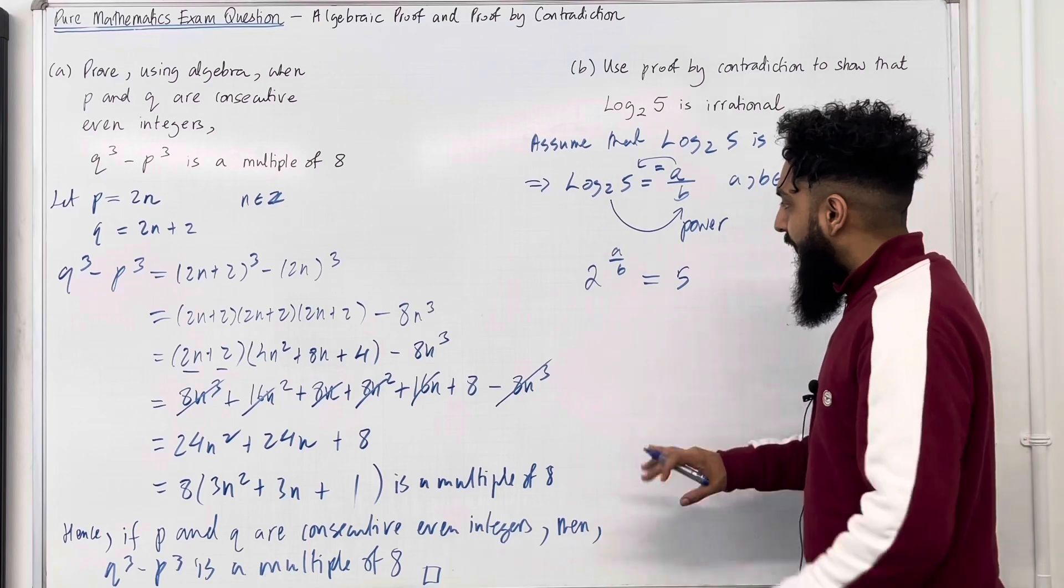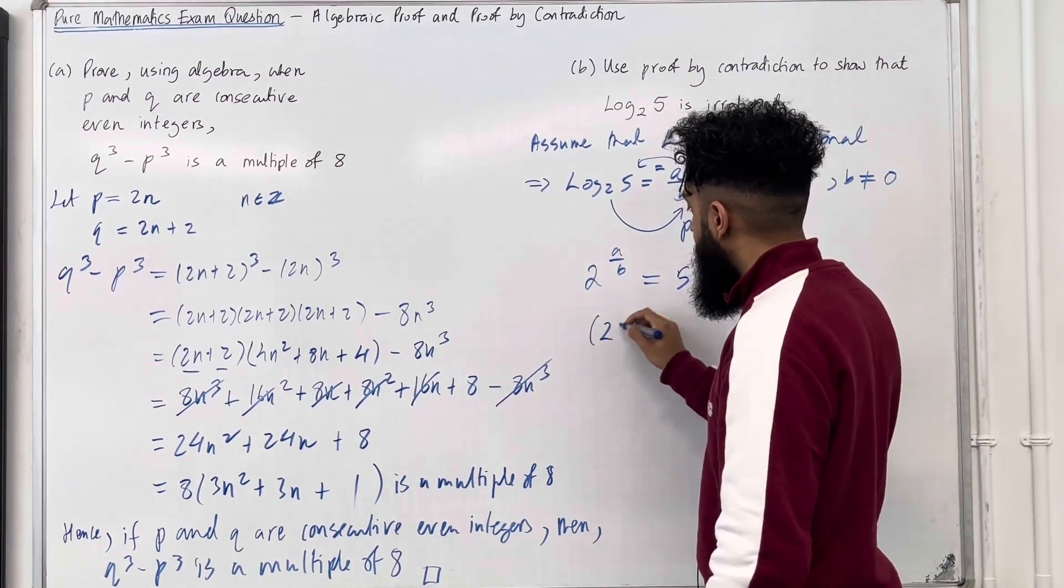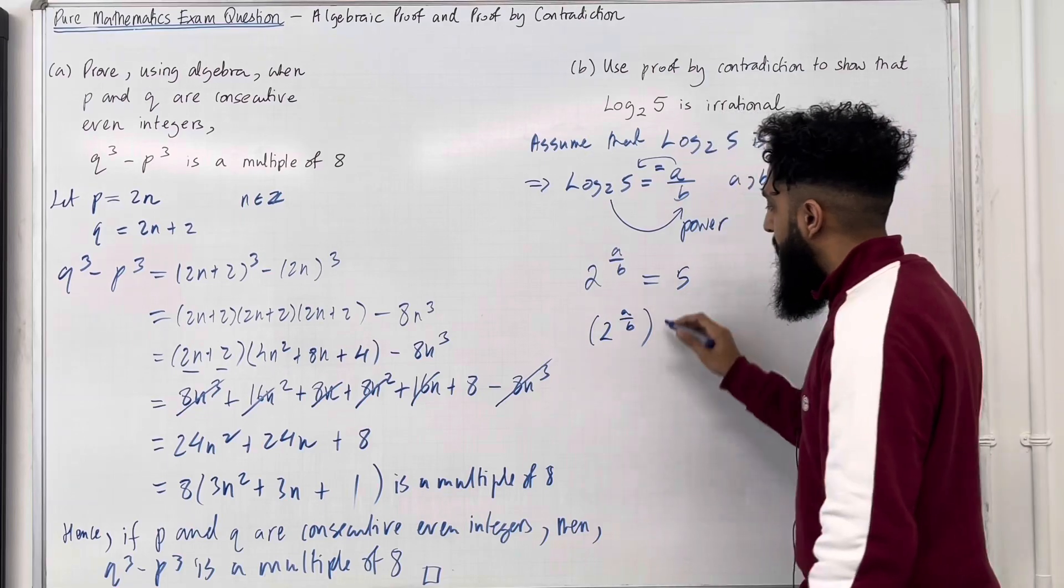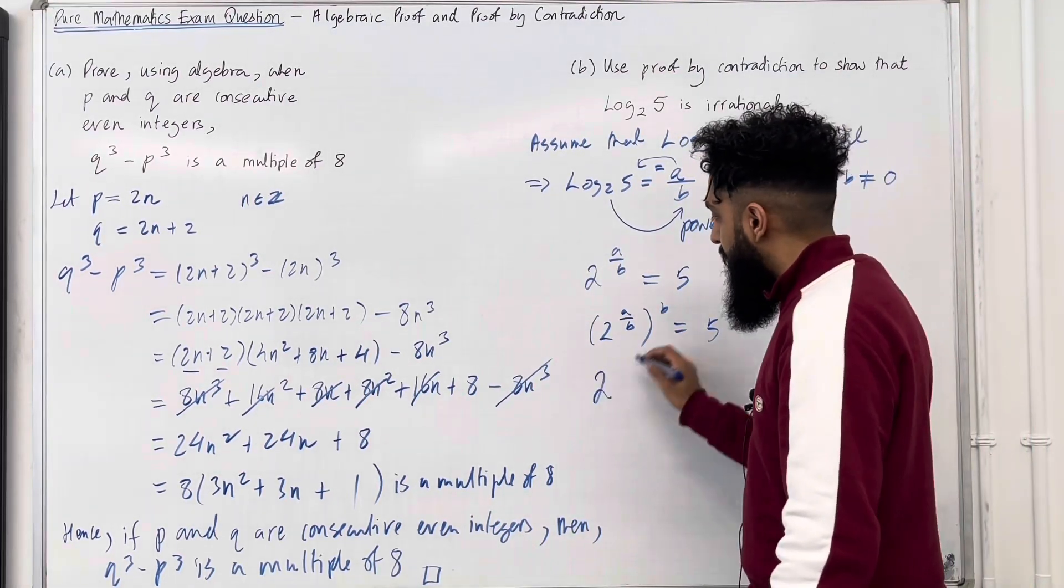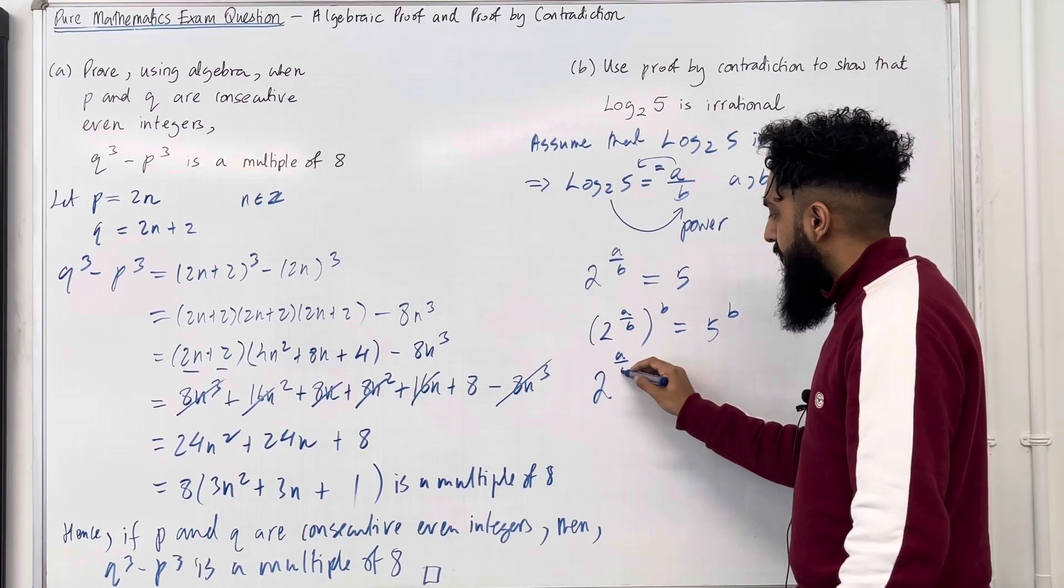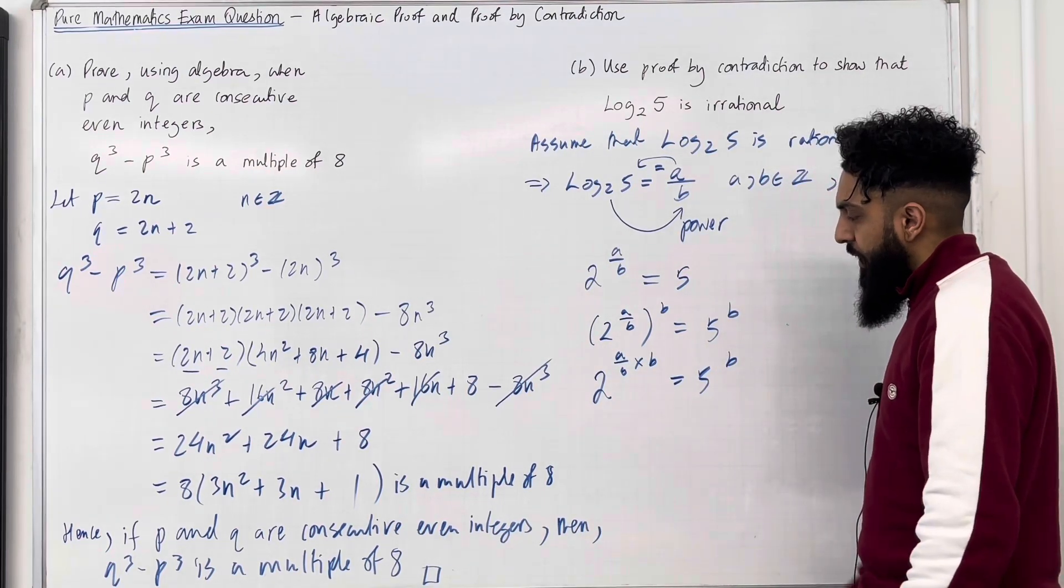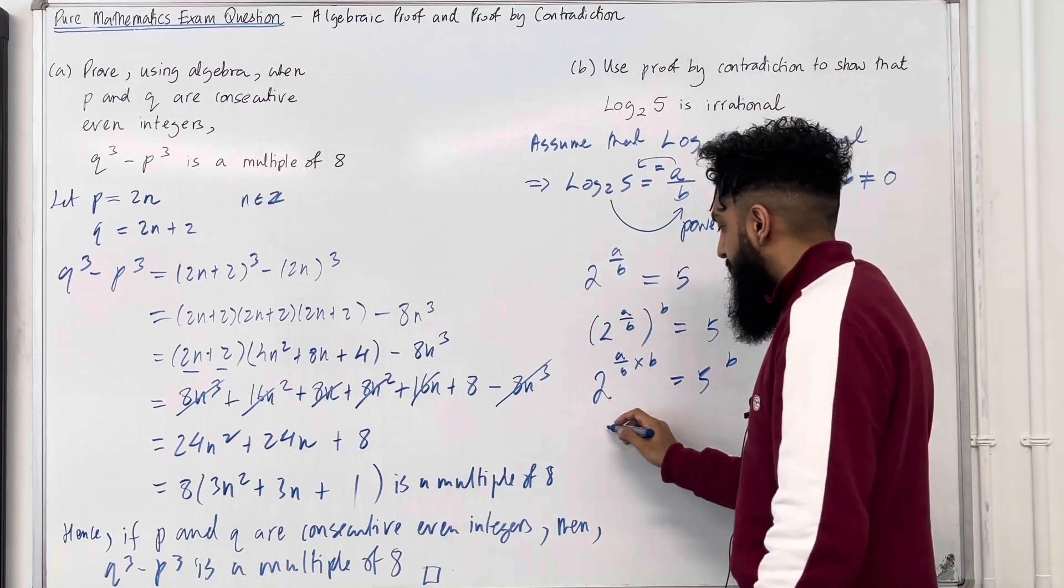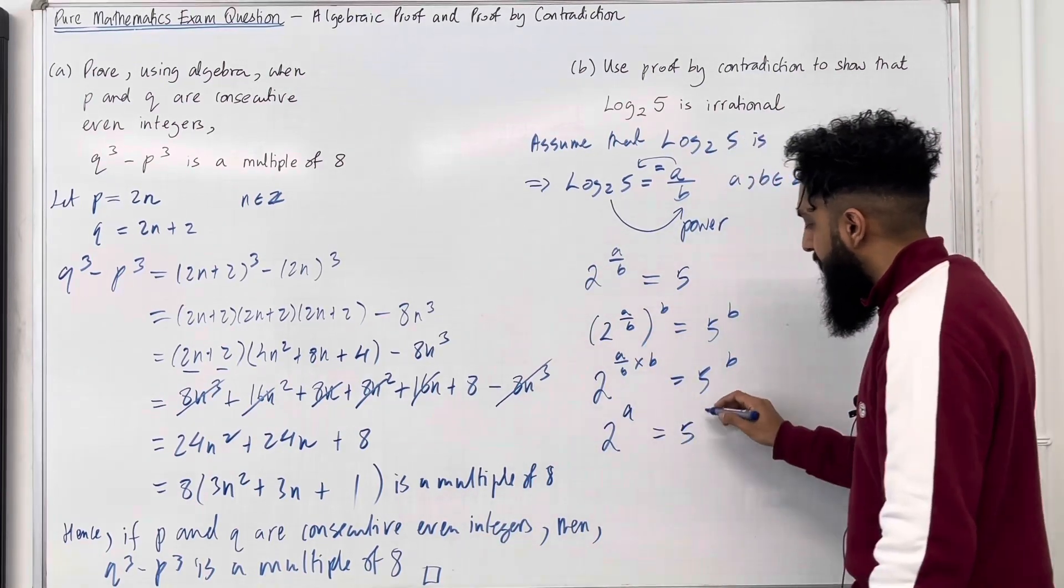Now what I can do on both sides is apply power B. So if I do this, I get 2 to the power A over B times B equals 5 to the power B. So A over B times B is just 2 to the power A equals 5 to the power B.